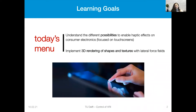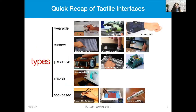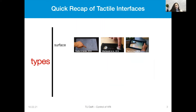Before diving into these topics, let's first remember the different types of tactile interfaces that you can find in research labs or in companies. We can combine all the different kinds of tactile interfaces into five types: variable surface, pin arrays, mid-air, and tool-based. In this lecture I will only cover surface haptic displays, which are programmable displays that can deliver a tactile feeling on physical surfaces.